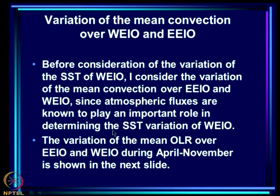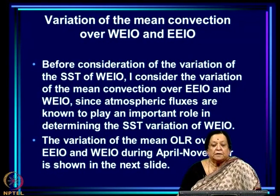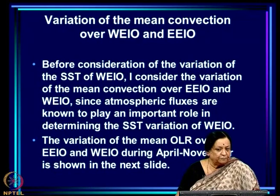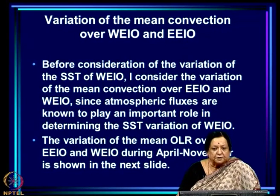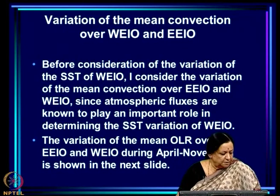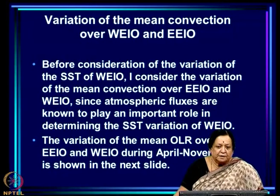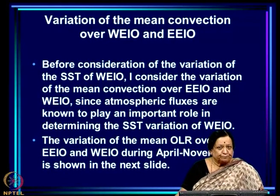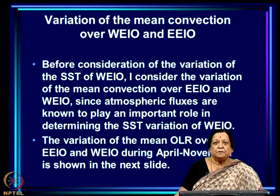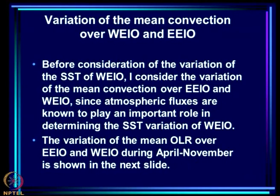To understand what happens to the SST of the western equatorial Indian Ocean, we must look at convection first, because SST of WEIO is very much dependent on the atmospheric fluxes. Whether there is convection or not is a very important factor in determining what sort of fluxes are driving the sea surface temperature of the west. Before considering the variation of SST of WEIO, let us look at how the mean convection evolves over both EEIO and WEIO, since atmospheric fluxes play an important role in determining the SST variation of WEIO.